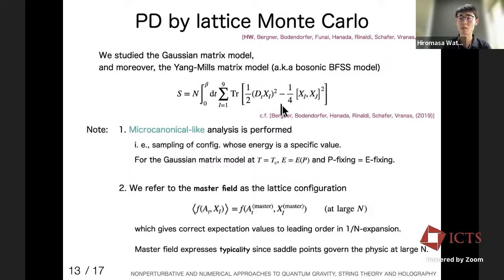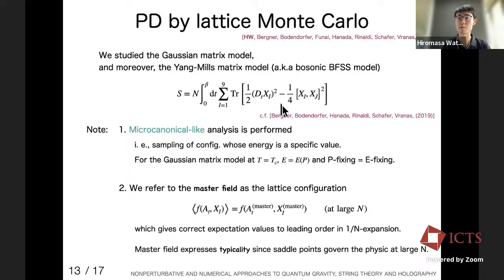Question from David Berenstein: Do you see negative specific heat in the interacting model? In the free matrix model there is no negative specific heat. Answer: That is a good question. We want to study this in the full BFSS or full BMN model to extract the negative specific heat, but that is the next step.